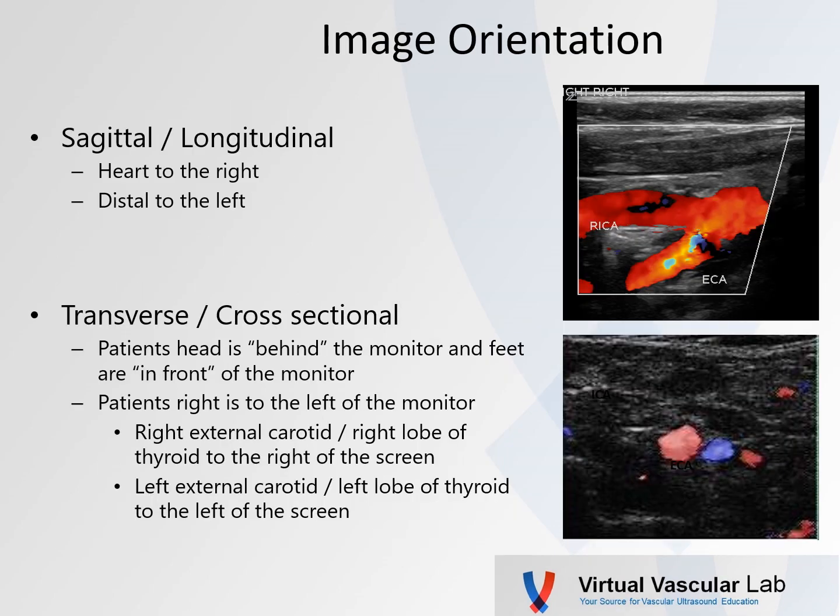So let's start off with image orientation. In a sagittal or longitudinal view, it's pretty straightforward: the heart is to the right of the image and the distal vessel is to the left.